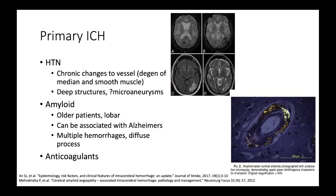Primary ICH is predominantly made up of hypertension and amyloid. With hypertension, chronic changes to the blood vessel cause the media and smooth muscle to degenerate, leading to fibrinoid necrosis or formation of small microaneurysms. These fragile blood vessels can rupture, typically in deep structures including the pons, thalamus, basal ganglia, and cerebellum. In first world countries, hypertension rates are coming down as we get better at controlling blood pressure, but it's still the more common source.